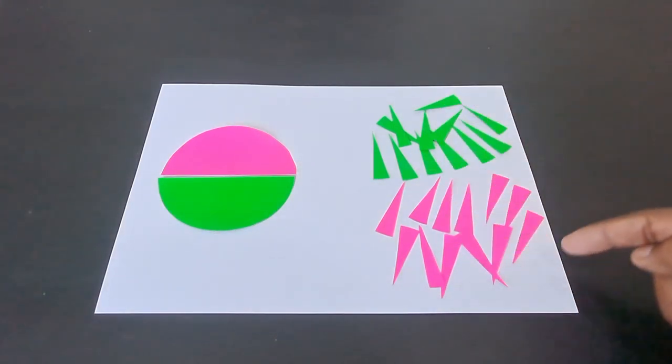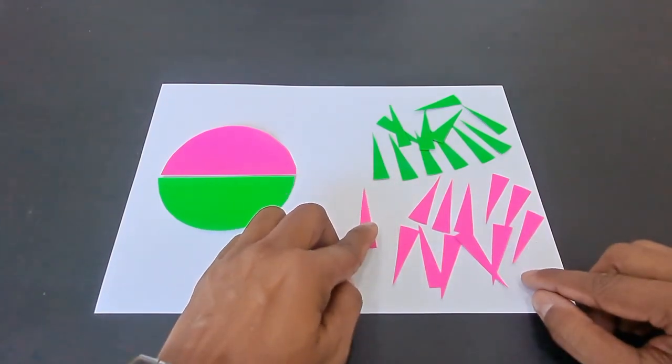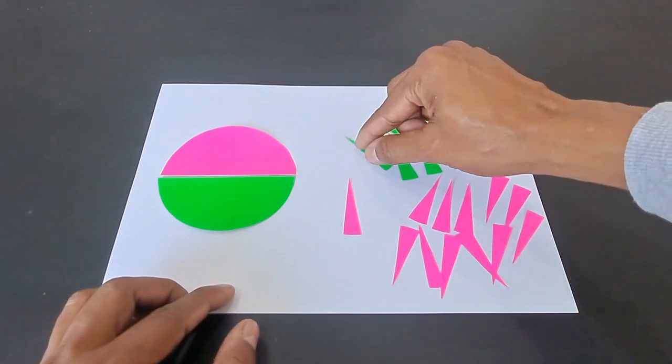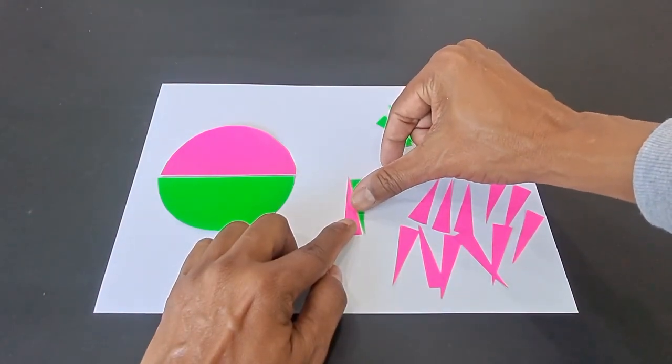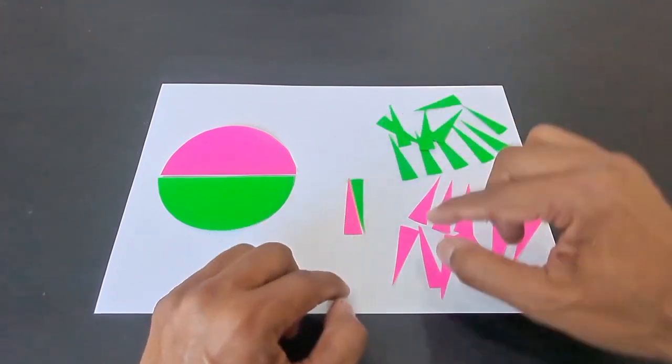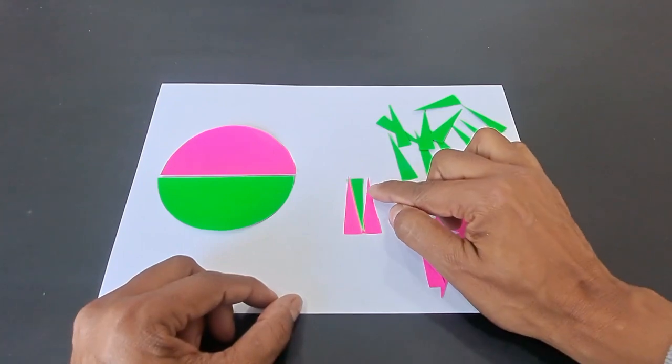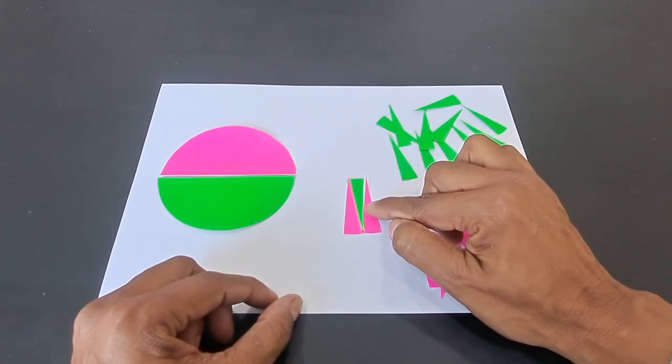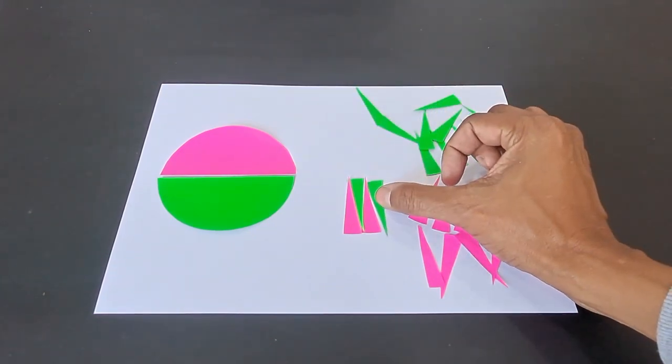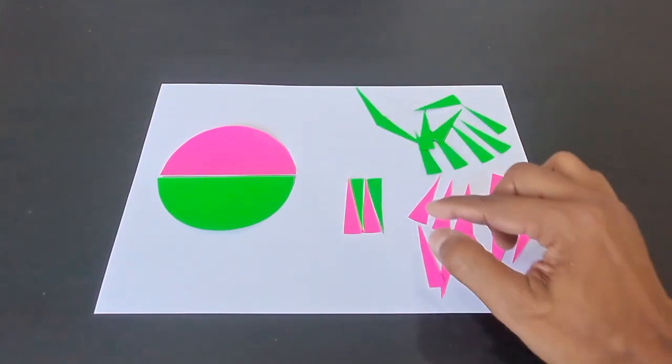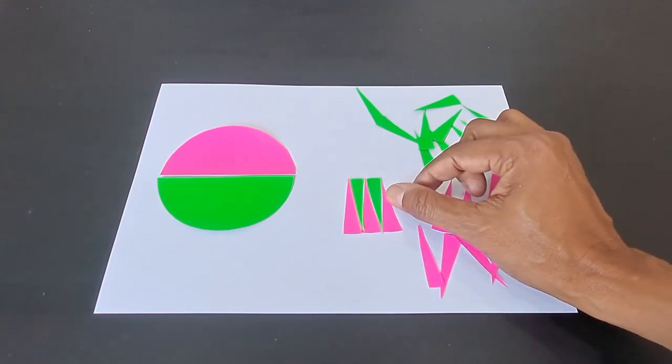So after cutting all these sectors, you need to arrange all the sectors in a particular pattern like this. I am arranging all the sectors placed adjacently like this. See, like this, and then the fourth one inverted like this, the fifth one like this. So you need to arrange all the sectors like this.